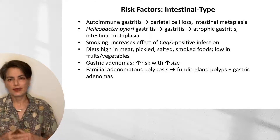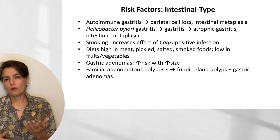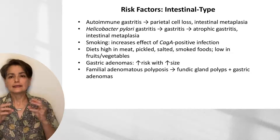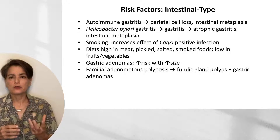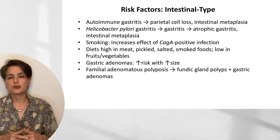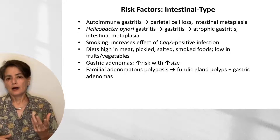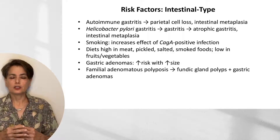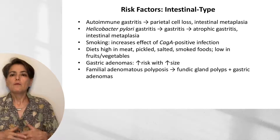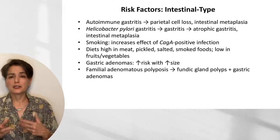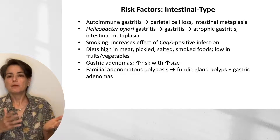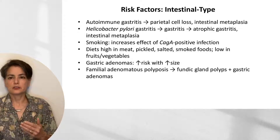Focusing first on risk factors for intestinal type: autoimmune gastritis, where autoantibodies to parietal cells destroy them, leads to intestinal metaplasia and a diffuse atrophic gastritis. H. pylori gastritis begins as non-atrophic, acute inflammation, moving to atrophic gastritis — patchier than autoimmune gastritis — with intestinal metaplasia, both setting us up towards the dysplasia-to-carcinoma progression.